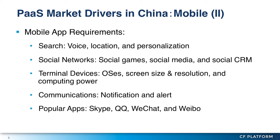There are some common services that we need to provide. The first is mobile search, social networks. We also need to take into consideration the devices, and the communications requirements for push notifications and other services. There are quite a few popular mobile apps in China, including QQ and WeChat, and we need to take care of this.